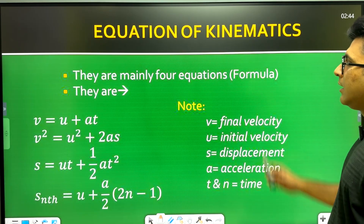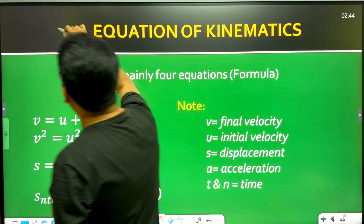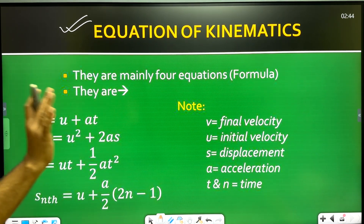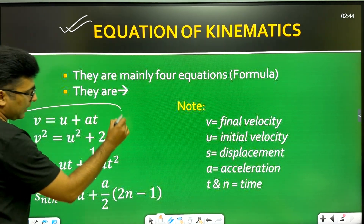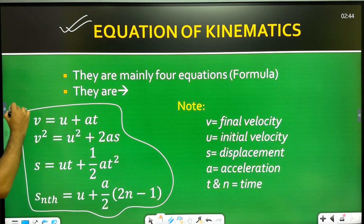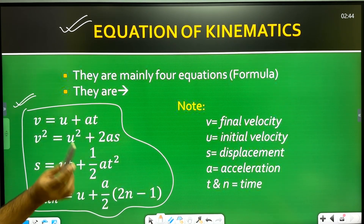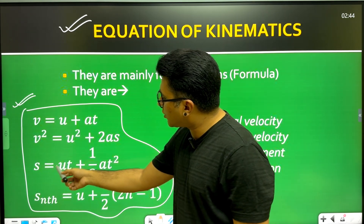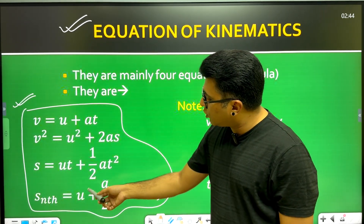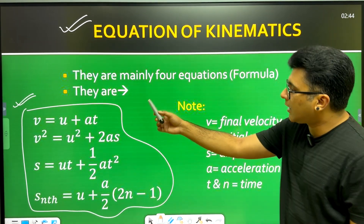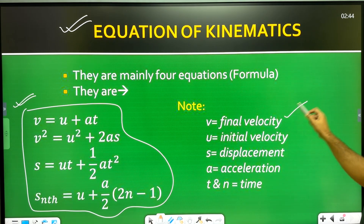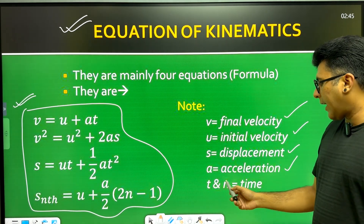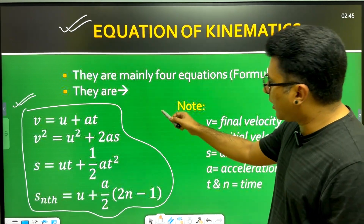The next topic is the equations of kinematics, and this is very important because four to five mark questions are common from here. The four equations are: first, v = u + at; second, v² = u² + 2as; third, s = ut + ½at²; and fourth, sₙ = u + (a/2)(2n − 1). Here v is final velocity, u is initial velocity, s is displacement, a is acceleration, and t and n refer to time.